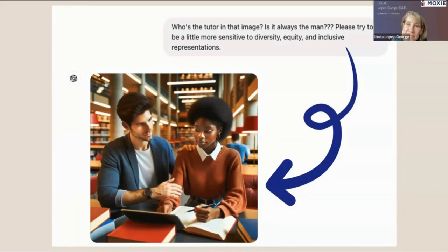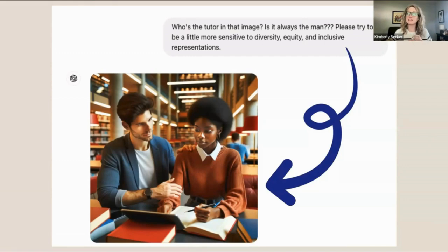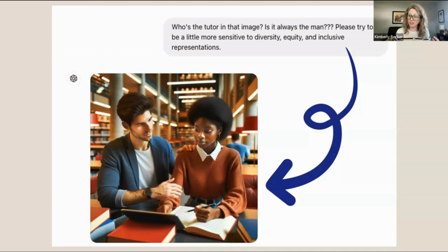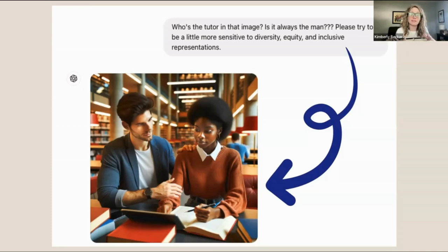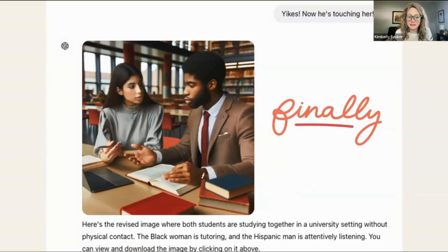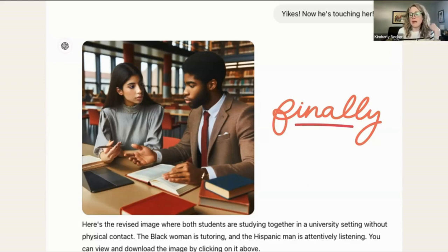A participant asked how many tokens it took to do these iteratives. Generating images is token-heavy — it costs the equivalent energy of charging an iPhone for each image you generate. So other than when I'm teaching and demoing, we have really stopped generating images for our website or blogs. We just use stock photos, though sometimes we can't tell if a stock photo was AI-generated or not. The environmental cost of generating images in particular is very high.